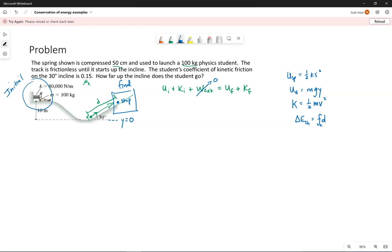By doing that, over here at this initial moment in time, the student will have gravitational potential energy because the picture shows us the student starts 10 meters above that dotted line. So that 10 meters will be our y initial.